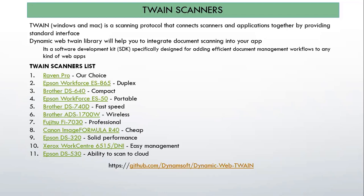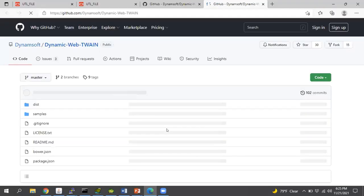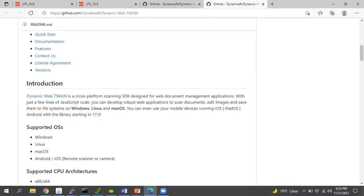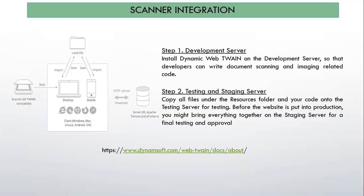If you're planning to integrate a scanner in your Oracle Apex application, you just need to check one thing: whether the TWAIN SDK protocol is enabled or not. I mentioned a list of scanners you can use — because we cannot rely on a single scanner. Once you add the TWAIN SDK protocol, it will support all types of scanners in which TWAIN SDK protocols are enabled. You can get complete help for this Dynamic Web TWAIN library from the provided link. For scanner integration, you just need to install the Dynamic Web TWAIN library. After installing, it will give you the facility to call all required APIs to get the image file from the source and save it in your container area.